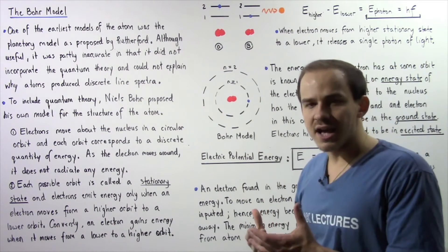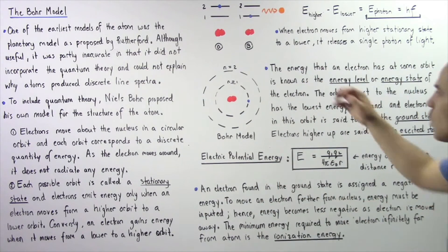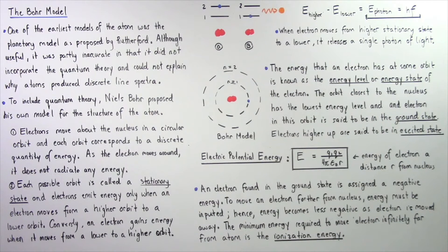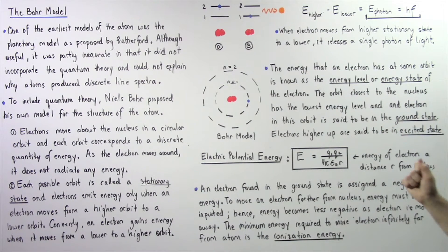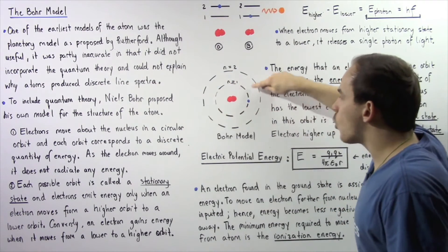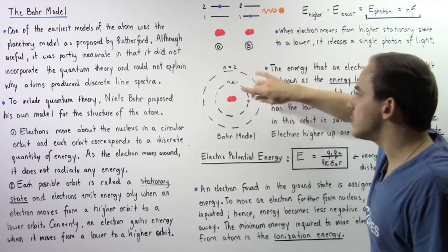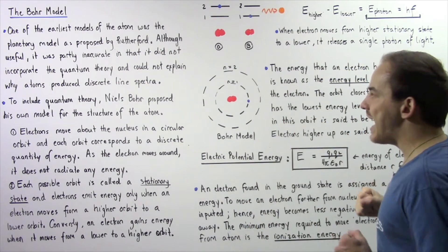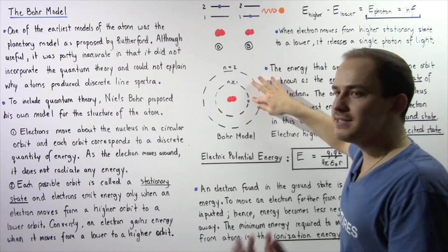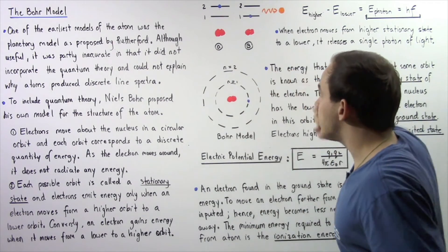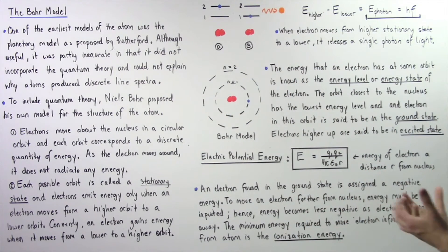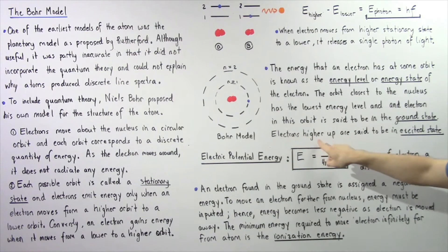Not only is energy quantized, but orbits are also quantized, as shown by these positive integers. The orbit closest to the nucleus has the lowest energy level, and the electron in this orbit is said to be in the ground state. If the electron is in the orbit lowest in energy and closest to the nucleus, it is in the ground state. However, if the electron is moved to the second orbital, it is said to be in the excited state — electrons higher up relative to the ground state are in the excited state.